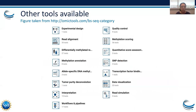There has been growing interest in finding patterns of DNA methylation. A large number of tools are available, as seen on omictools.com, which has a catalog of genomics bioinformatics tools. In the bisulfite sequencing category, for read alignment alone there are already 33 different tools available, with tools ranging from experimental design to read simulation.